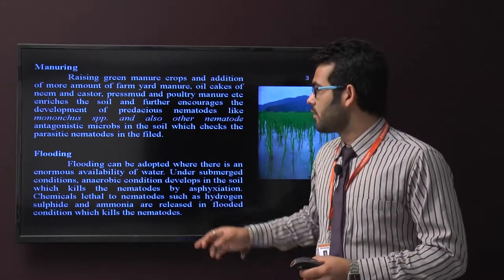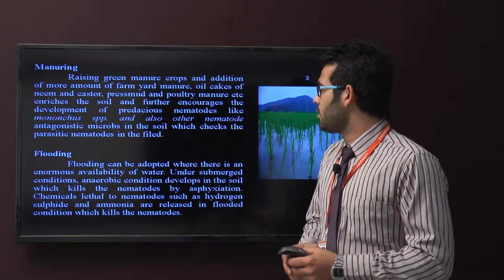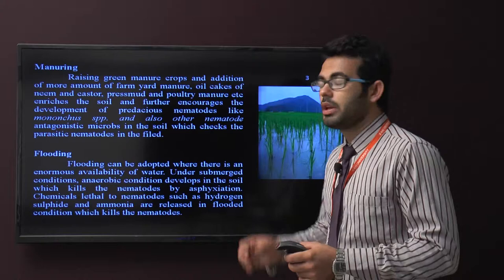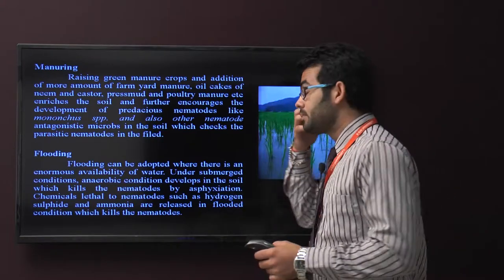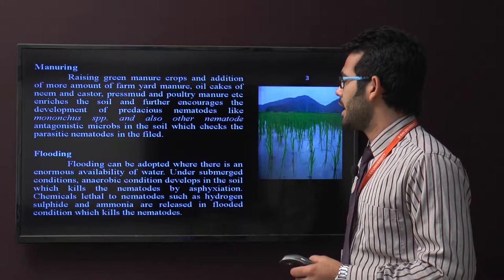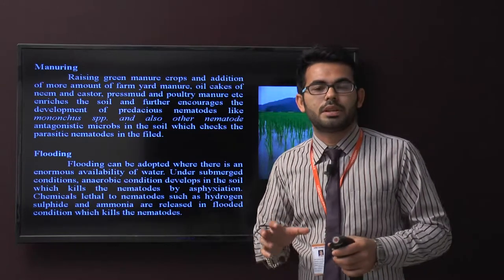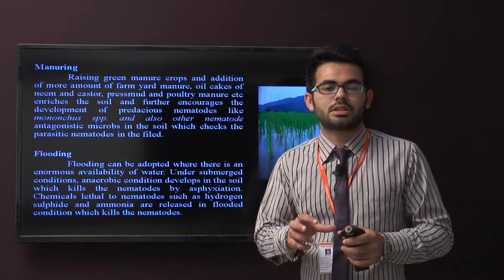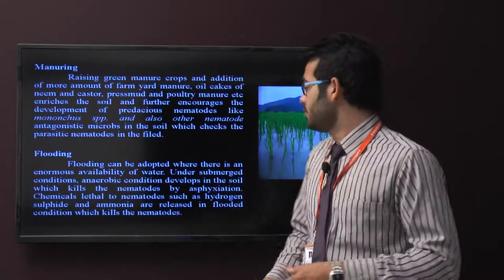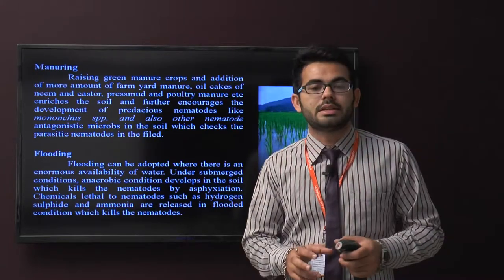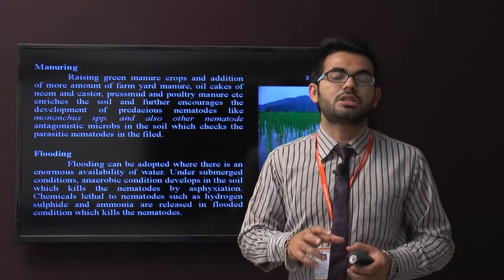Next one is flooding. Flooding can be adopted where there is enormous availability of water. Flooding is generally used in rice crops. Under submerged conditions, anaerobic conditions develop in the soil which kills the nematodes by asphyxiation. Chemical residues of the nematodes such as hydrogen sulfide and ammonia are released in flooded conditions which kill the nematodes.